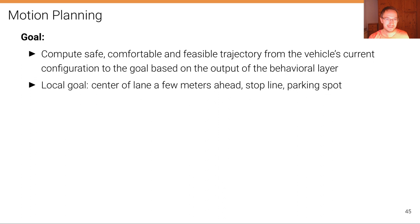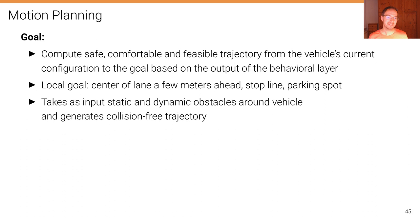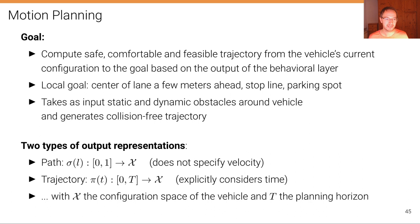For example, planning towards the center of the lane a few meters ahead of the vehicle or planning to the next stop line or parking spot. The motion planner takes as input static and dynamic obstacles around the vehicle and tries to generate a collision-free trajectory. There are two fundamental types of output representations.